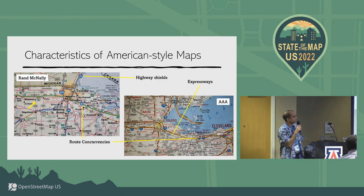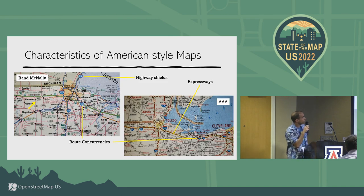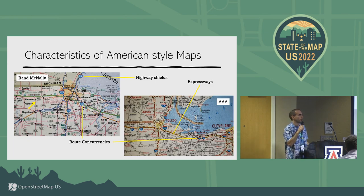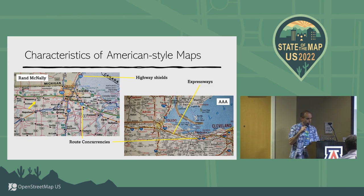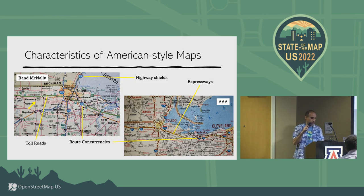Expressways are drawn in here too. On the Rand map they're yellow, cased, and red; on the AAA map they're white, cased, and black. Expressways are not quite freeways — they're high-quality, high-speed roads that don't quite meet interstate-type standards. Toll roads are another key feature; there's no toll road coloring on the standard tile layer, but we do expect to see them on American-style maps.